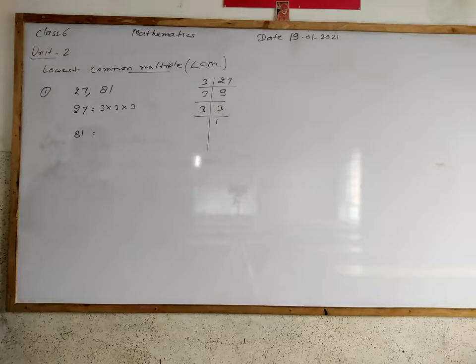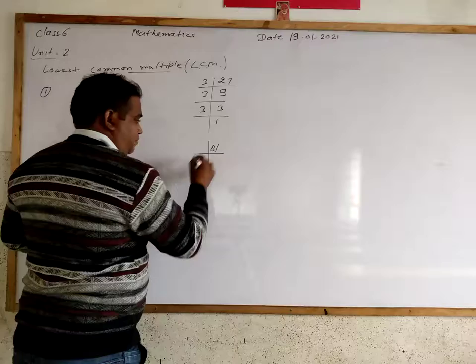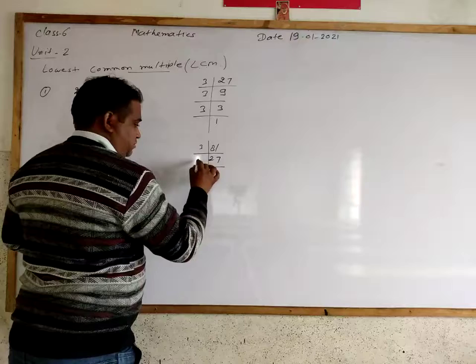And the factor is 3 multiply 3 multiply 3. Now for 81, 81 can divide by 3 first.